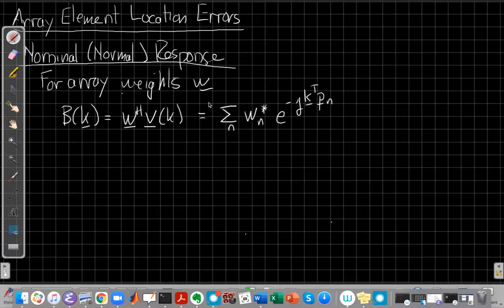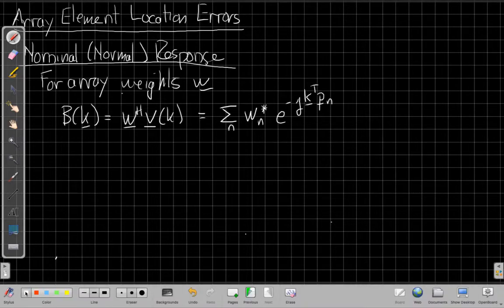So our beam pattern for array weights W, if we think about a vector K, a plane wave coming with a propagation vector wave number K, we said that this beam pattern is how this single spatial filter W responds to every possible input signal B of K. So we just take the inner product where K is now my function here, and we get this expression as this inner product if we write it out term by term.